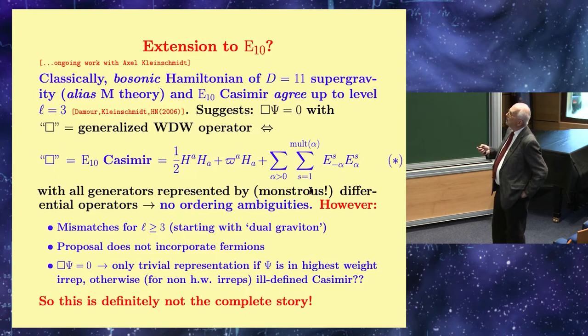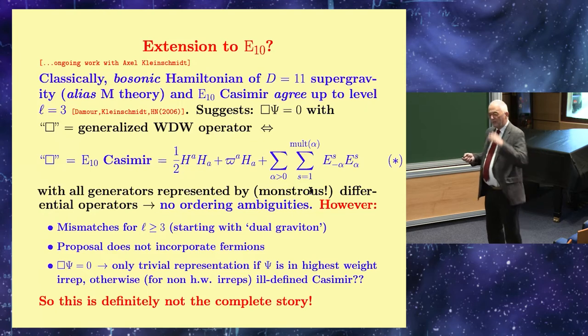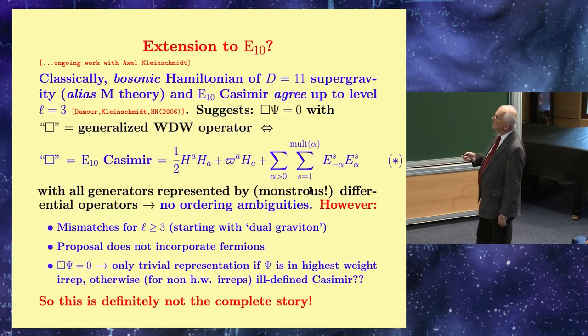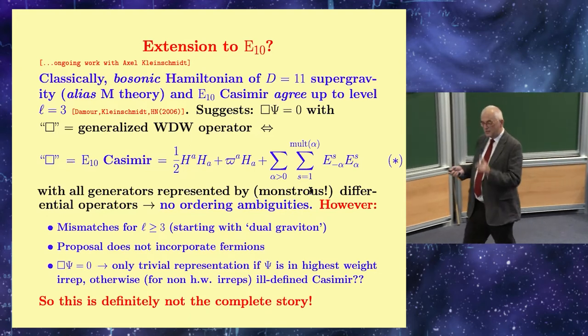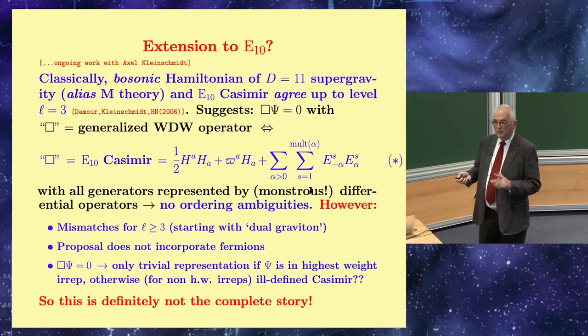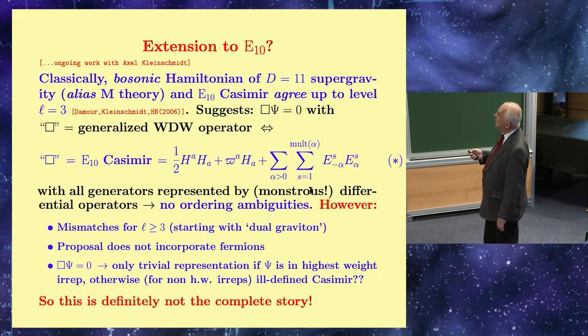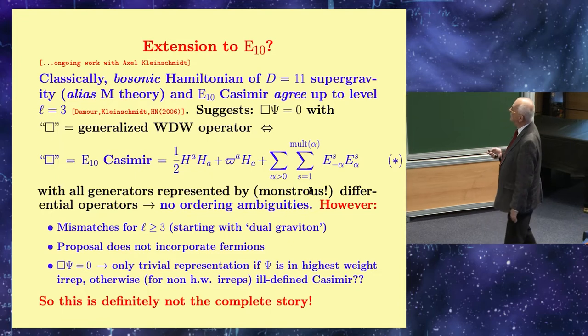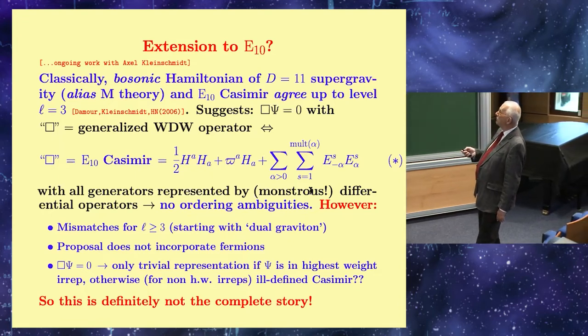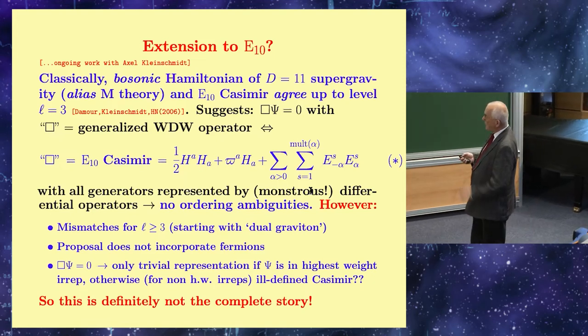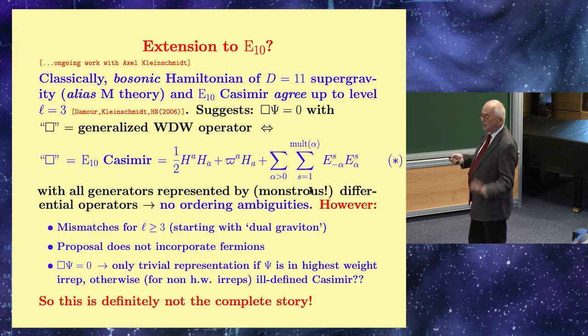Level is just a way to probe into E10. This is a very non-trivial agreement. It tells you that E10 somehow knows everything about maximal supergravity. This simply suggests why don't we generalize the wave function equation, where now the box is something much bigger. Namely, the box is the E10 Casimir. The E10 Casimir exists, you can read in Victor Kac's book. It's a unique expression written here where you have the Cartan subalgebra, this is the Weyl vector, and here you have the sum of all the raising generators, normal ordered.